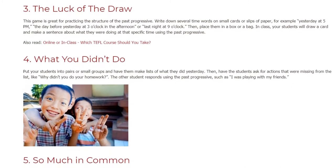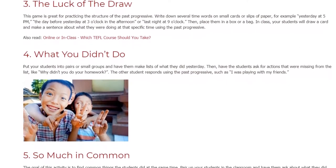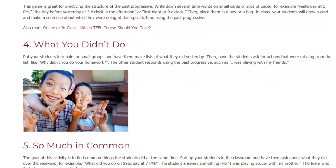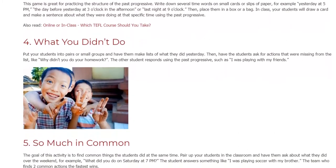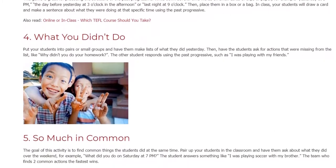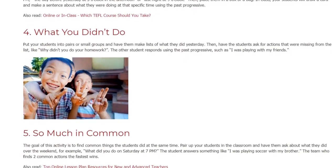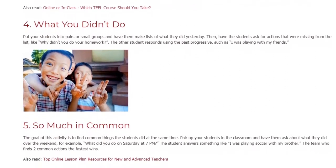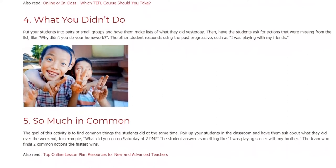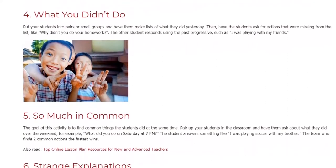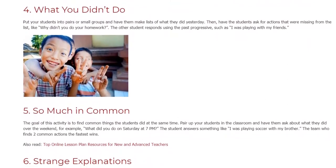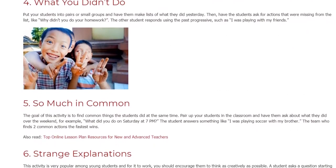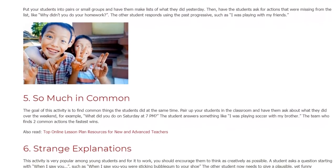Activity 5: So Much In Common. The goal of this activity is to find common things the students did at the same time. Pair up your students in the classroom and have them ask about what they did over the weekend, for example 'what did you do on Saturday at 7 pm?' The student answers something like 'I was playing soccer with my brother.' The team who finds two common actions the fastest wins.